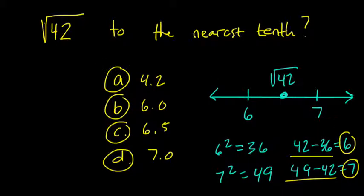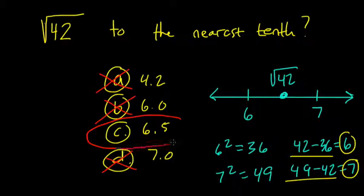So if I look at my choices now, 4.2 is out. It looks like they just took 42 and put a decimal in there. I need a number between 6 and 7. B is 6, D is 7, and 6.5 is the most reasonable and closest choice. Notice I didn't have to get too much into calculation here because of the choices they gave us.